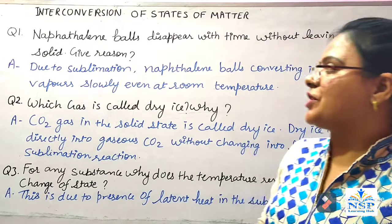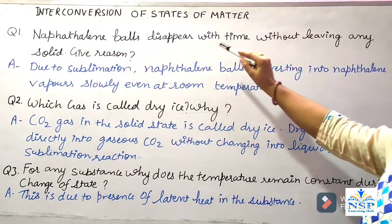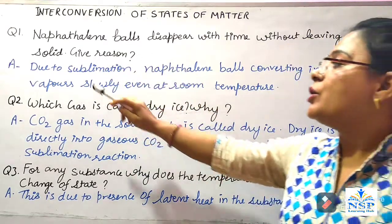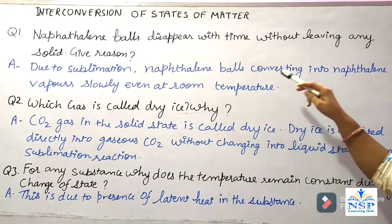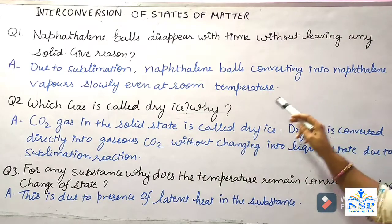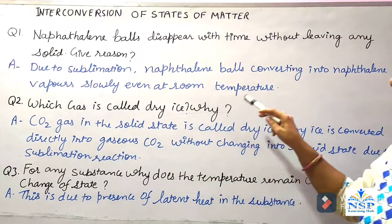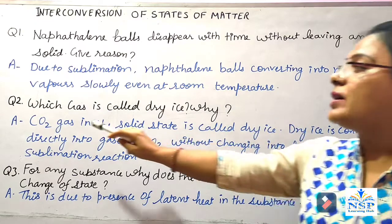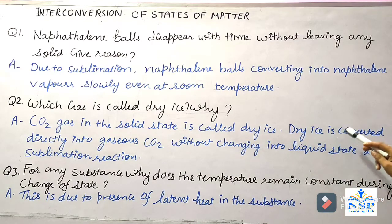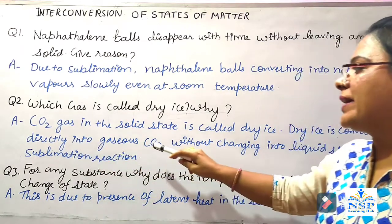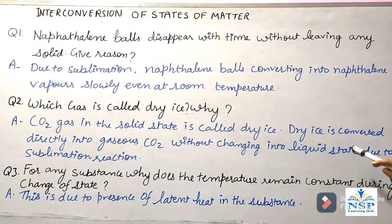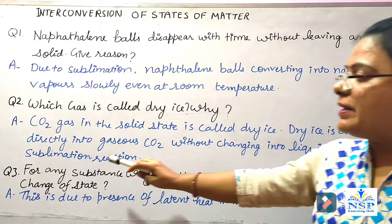Question 1: Naphthalene balls disappear with time without leaving any solid — give reason. Due to sublimation, naphthalene balls convert into naphthalene vapors slowly even at room temperature. Question 2: Which gas is called dry ice and why? Carbon dioxide in the solid state is called dry ice. Dry ice is converted directly into gaseous carbon dioxide without changing into liquid state due to sublimation.